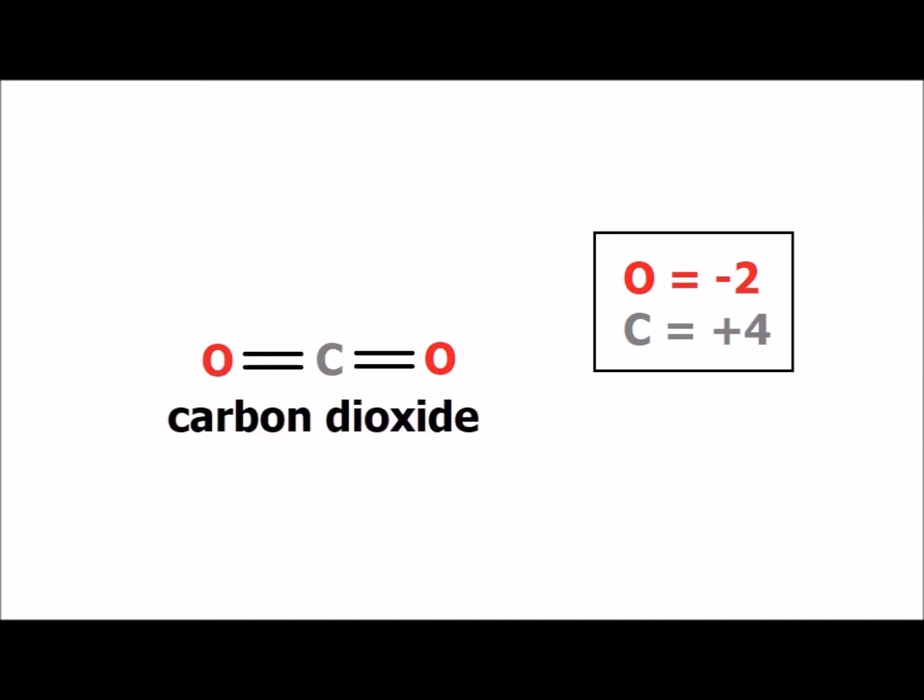The common endpoint for extreme oxidation of carbon, as in burning, is carbon dioxide. Since each oxygen has an oxidation number of minus 2, the oxidation number of carbon must be plus 4 in carbon dioxide.